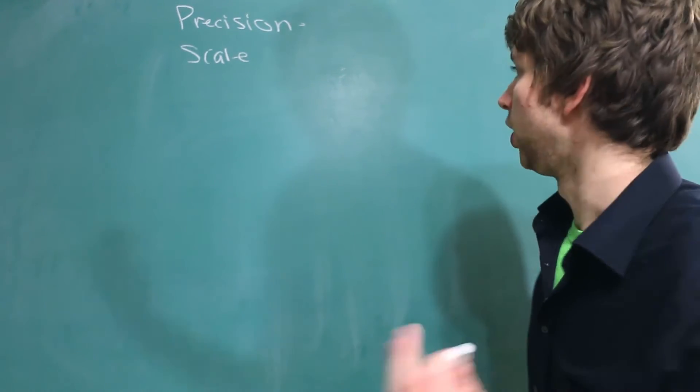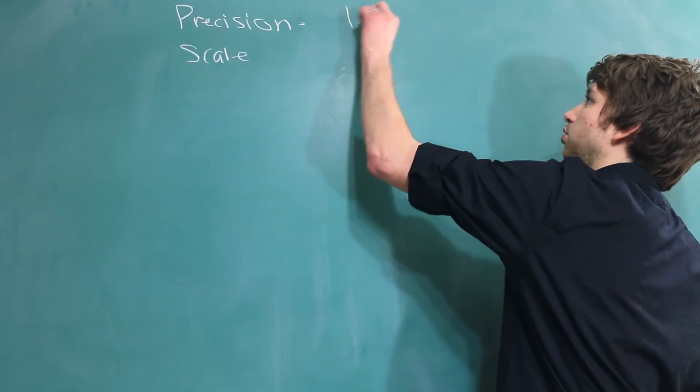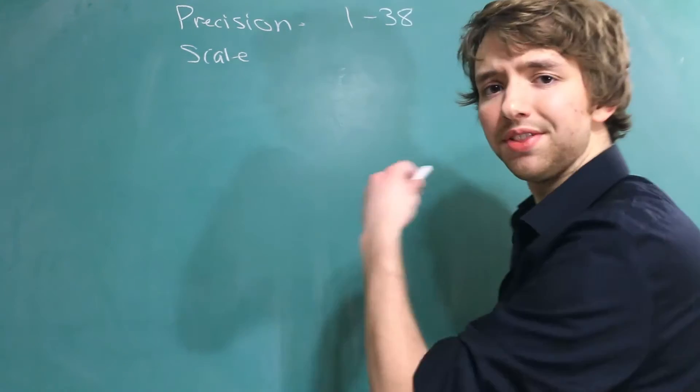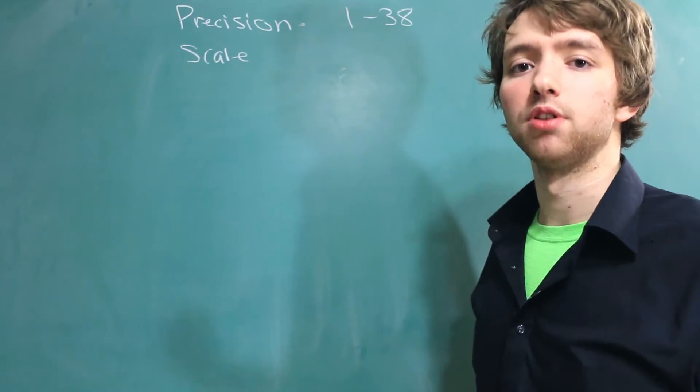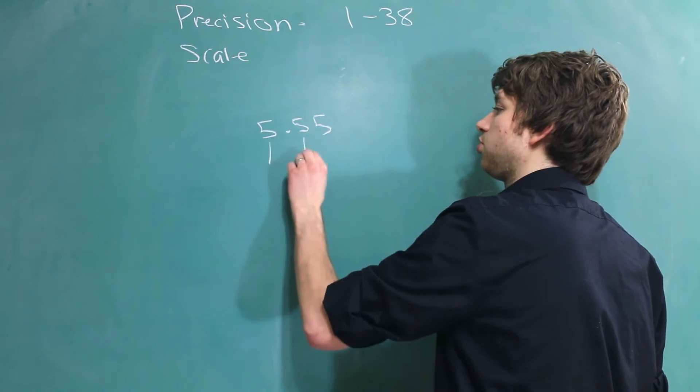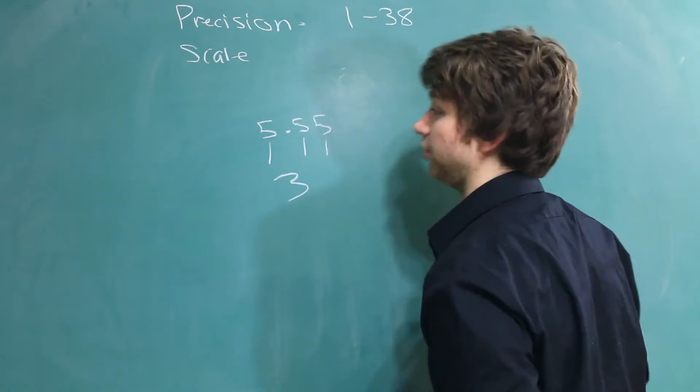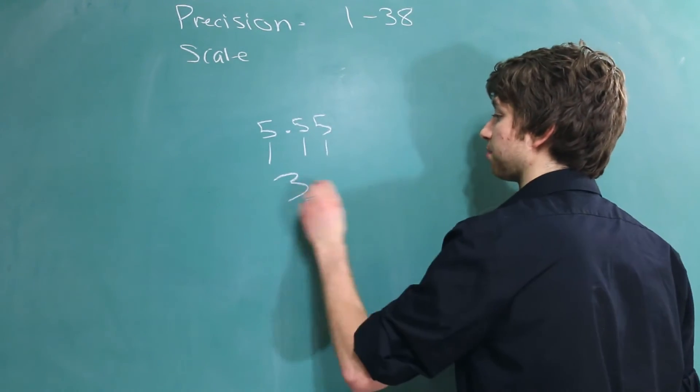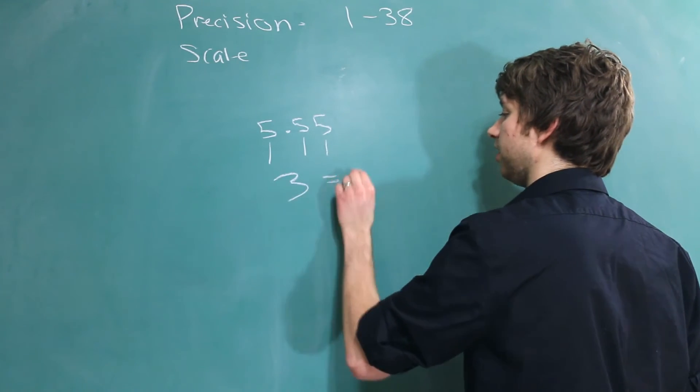If you decide to set a precision you have the options of giving a value 1 through 38. And what this number refers to is the total number of digits in your number. So for example this number has 1, 2, 3 digits. So we could say that the precision is 3.